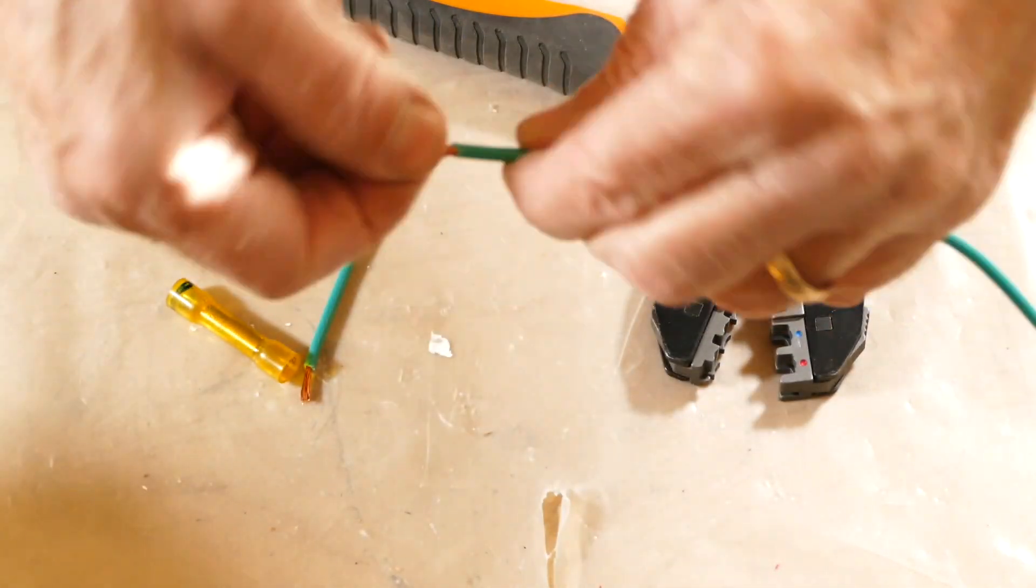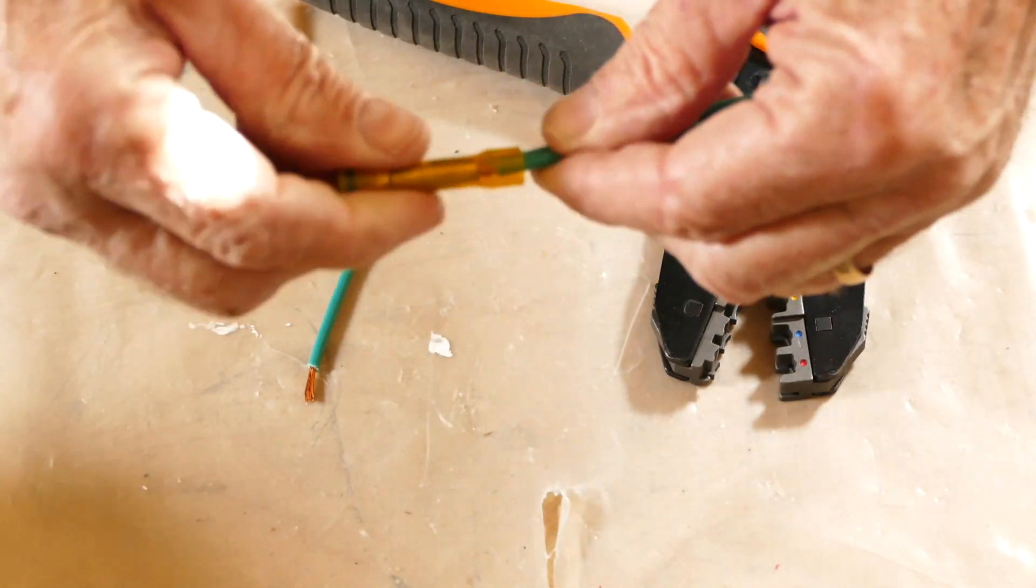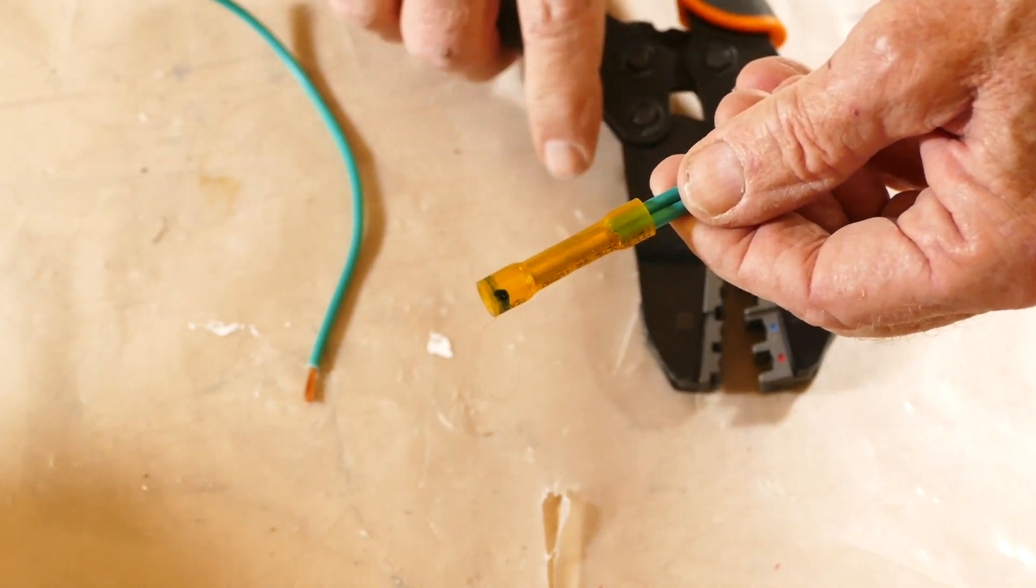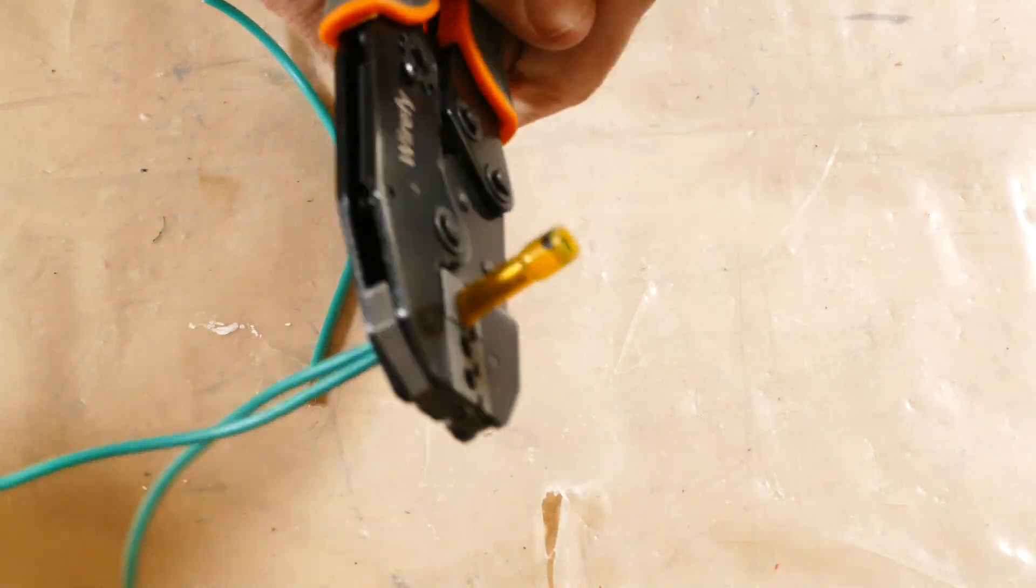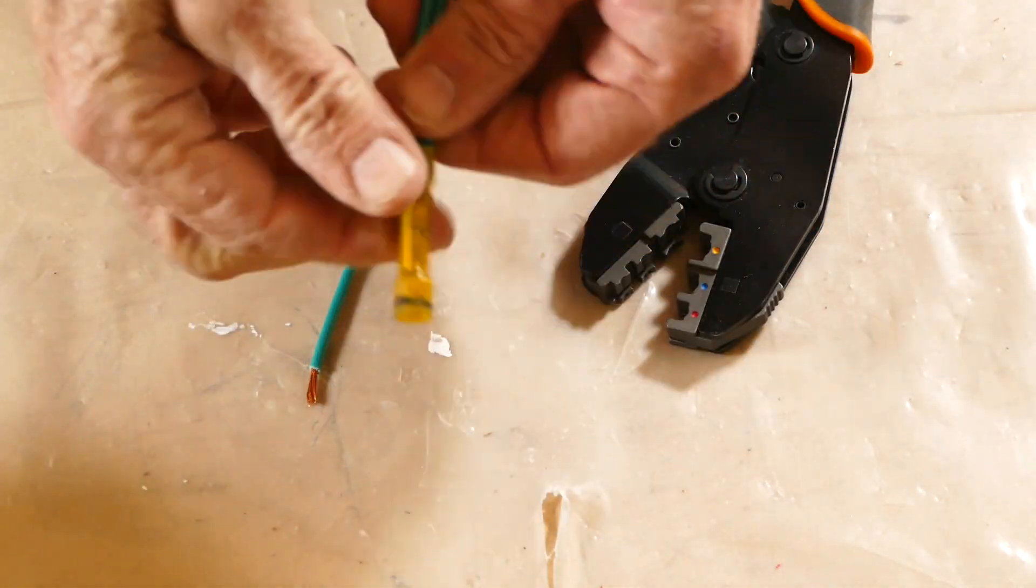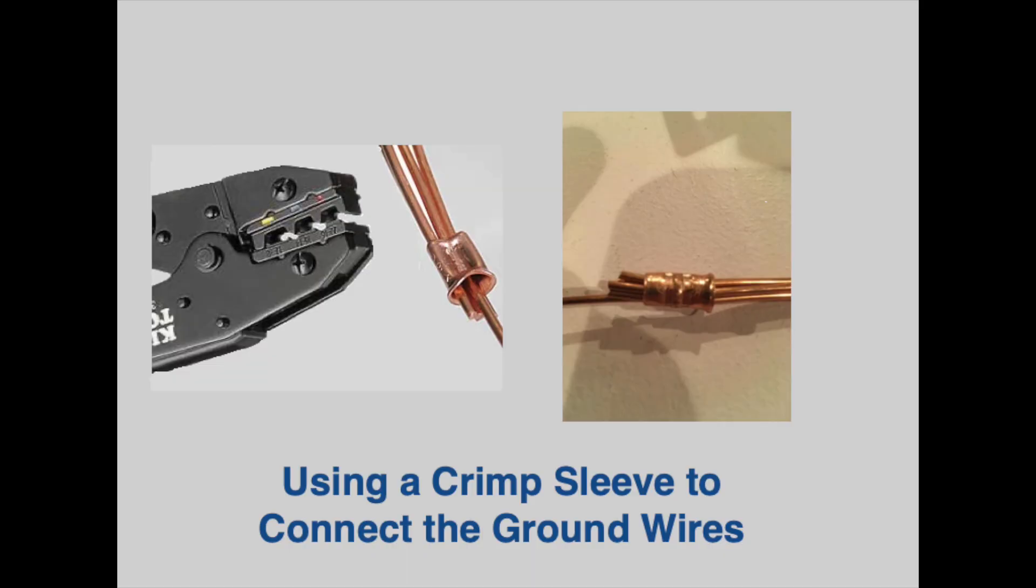Connect all the ground wires together. I found that a wire nut is too large to fit into the small switch enclosure, so I used a butt connector. A crimp sleeve will also work.